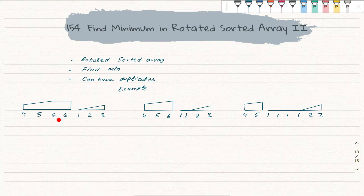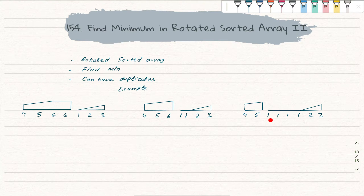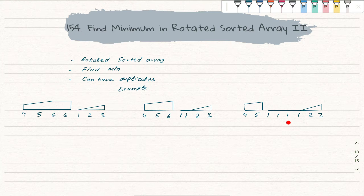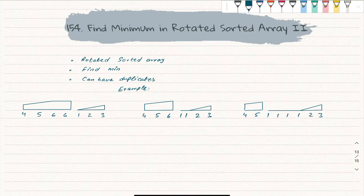In one example six is repeated, in another one is repeated, and in yet another one is repeated even more. It can be other elements too — it's not only one element that can have multiples; multiple elements can be repeated. So how will we solve this question?